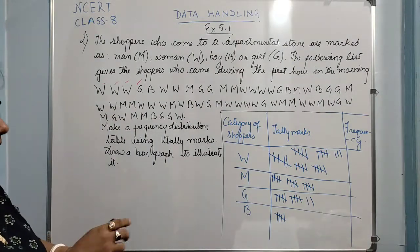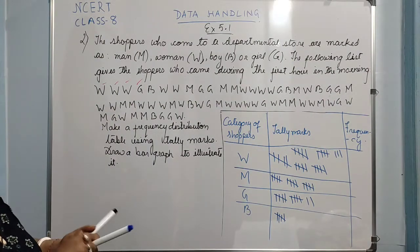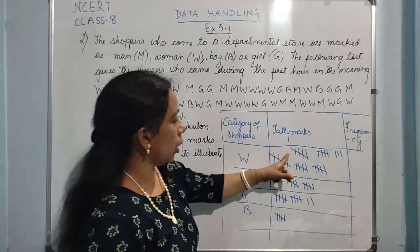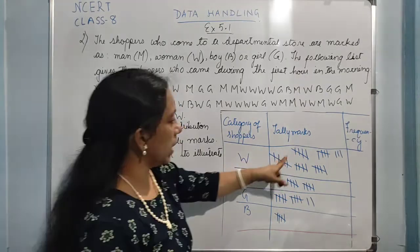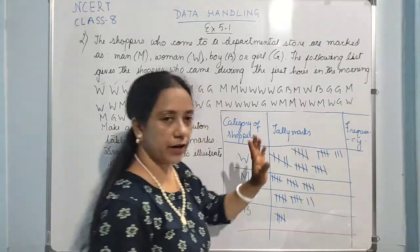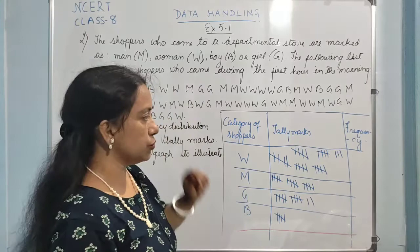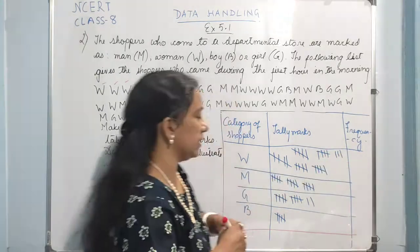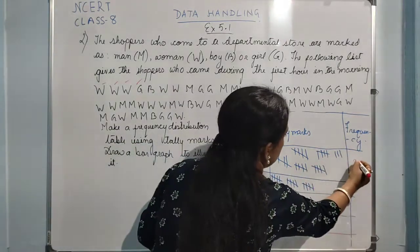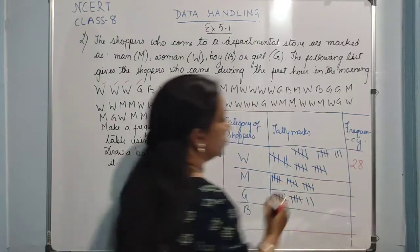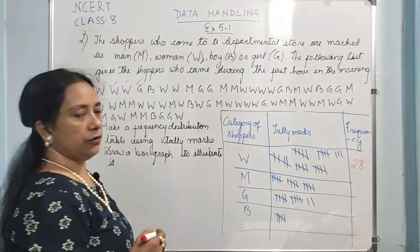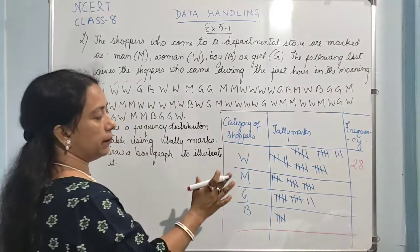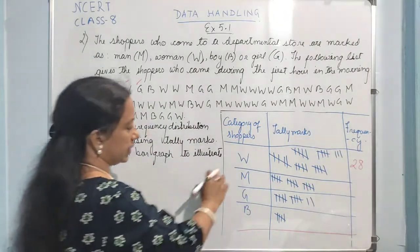Like this, we have got all the tally marks. So here, we have got how many bunches for women — one, two, three, four, five — that gives twenty-five, twenty-six, twenty-seven, twenty-eight. So the total frequency for women comes to be twenty-eight. Frequency is nothing but the total number of times a particular event is occurring.